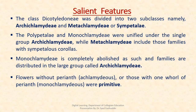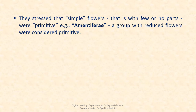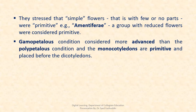The Monochlamydeae of Bentham and Hooker is completely abolished and their families have been distributed in Archichlamydeae. Flowers without perianth or those with one whorl of perianth were considered to be primitive. Flowers with two-whorled perianth distinguished into sepals and petals are considered as an advanced character. They stressed that simple flowers with few or no parts were primitive — for example, the Amentiferae group with reduced flowers were considered to be the primitive ones.